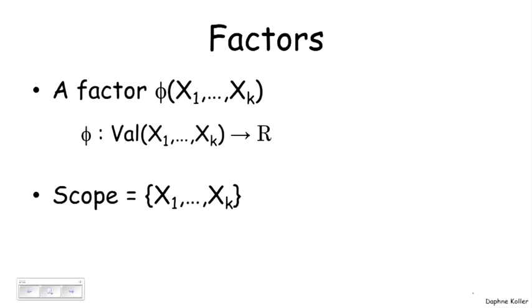So a factor really is a function or a table. It takes a bunch of arguments, in this case a set of random variables x1 up to xk, and just like any function, it gives us a value for every assignment to those random variables. So it takes all possible assignments in the cross product space of x1 up to xk, that is all possible combinations of assignments. And in this case it gives me a real value for each such combination. And the set of variables x1 up to xk is called the scope of the factor. That is, it's the set of arguments that the factor takes.